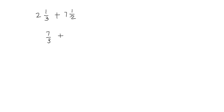Now I'm going to convert the second mixed fraction into a fraction. We multiply the whole number with the fraction's denominator. So 7 times 2 gives me 14, and then we add that to the numerator. 14 plus 1 gives me 15, so I write 15 in the numerator, and the denominator stays 2.